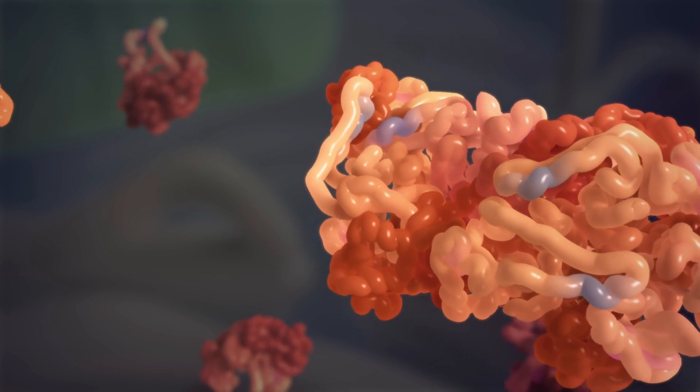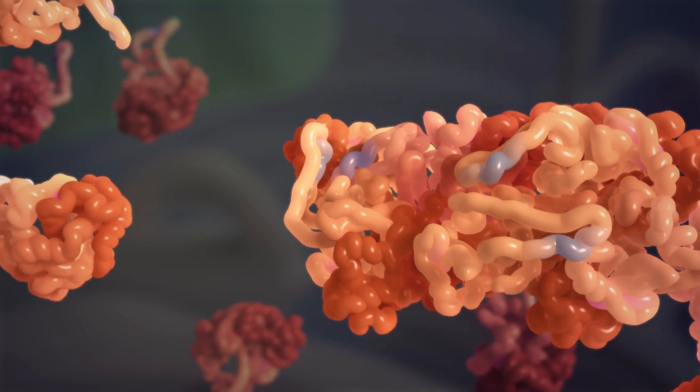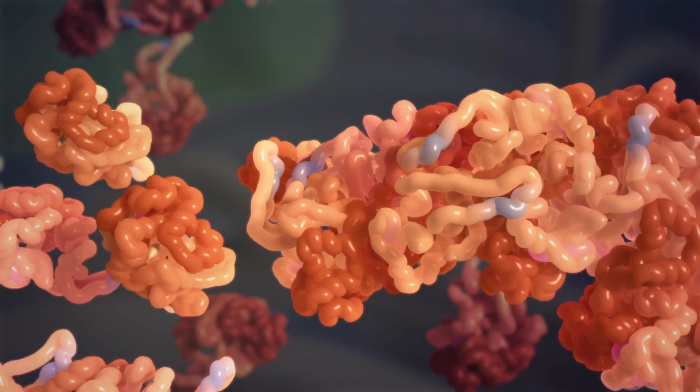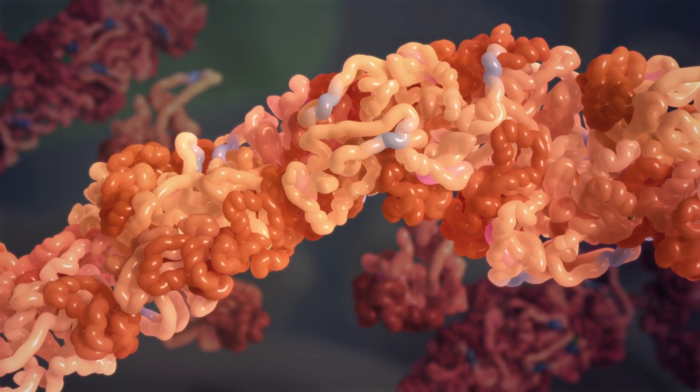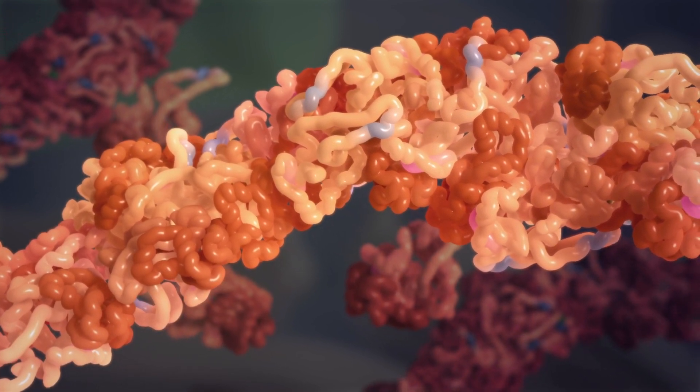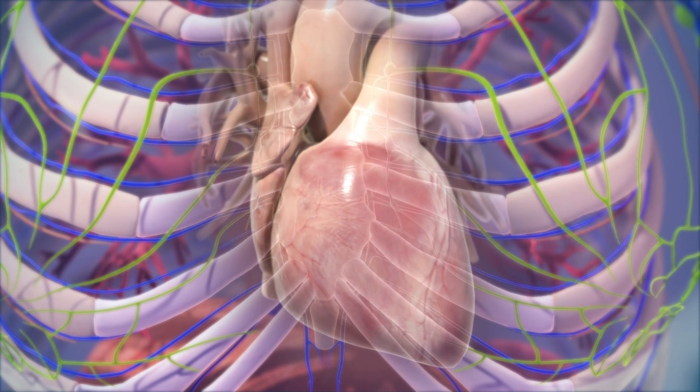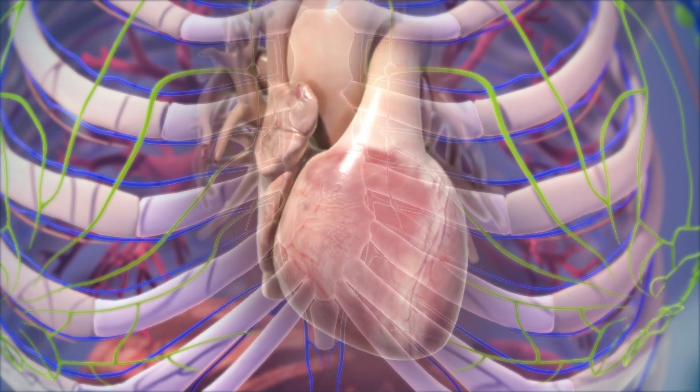Amyloidosis occurs when misfolded proteins aren't removed in the normal way. Instead, they accumulate and stick together to form long, rigid fibrils that deposit in various tissues and organs. These deposits are called amyloid and, over time, start to cause damage.